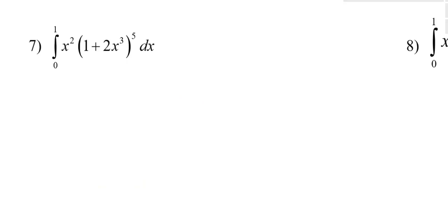So let's take a look at this example in front of us. We are going to integrate from 0 to 1 the antiderivative of x squared times the quantity 1 plus 2x cubed all to the fifth with respect to x.